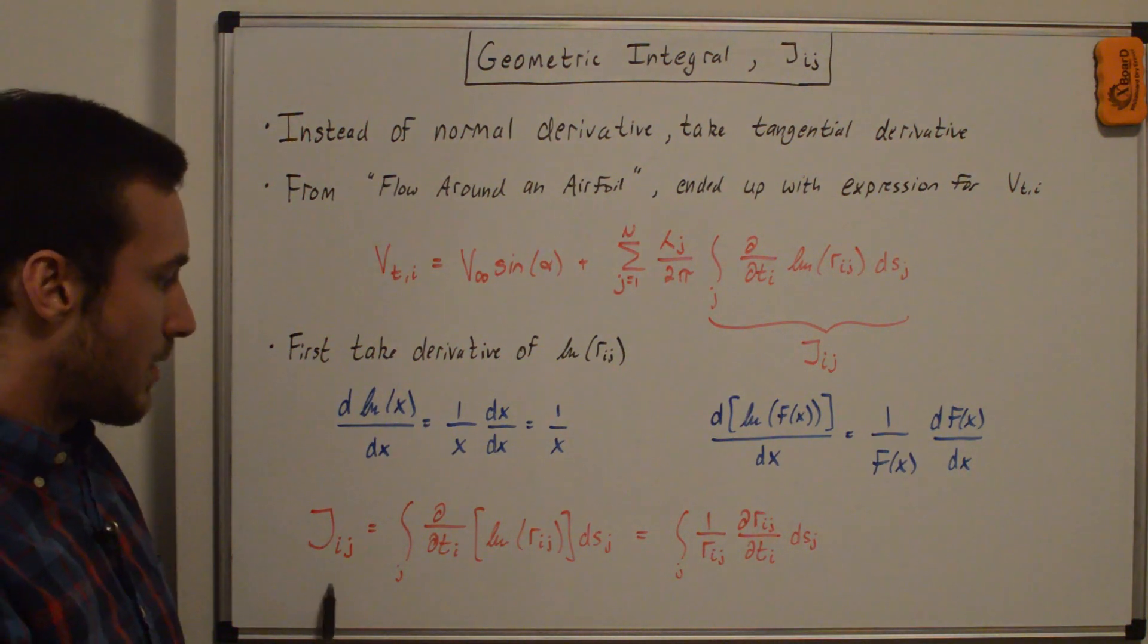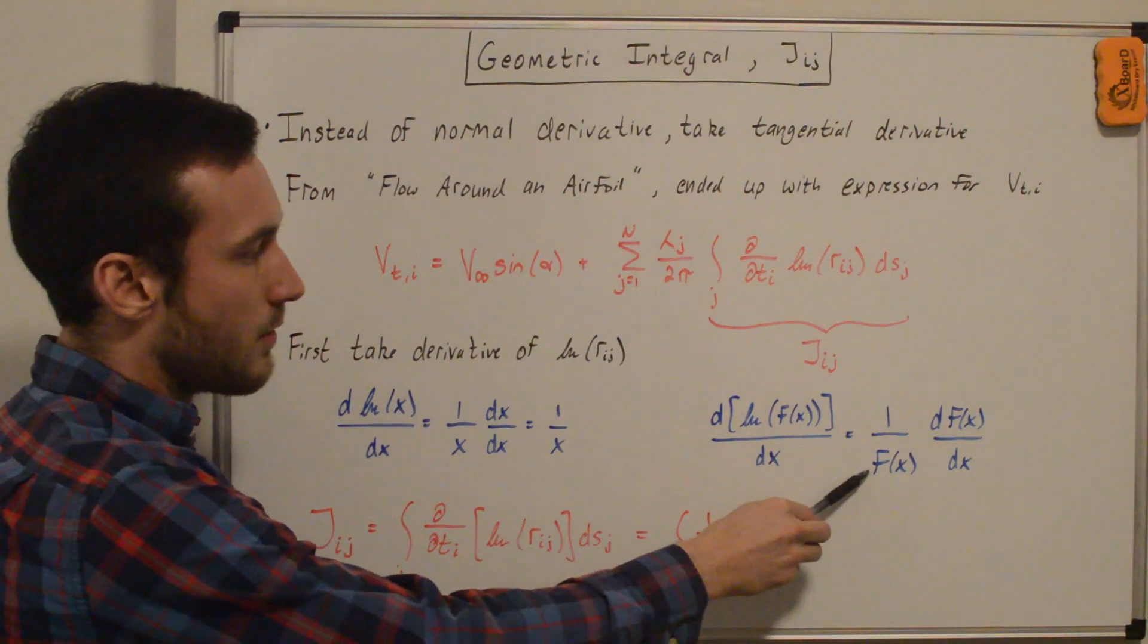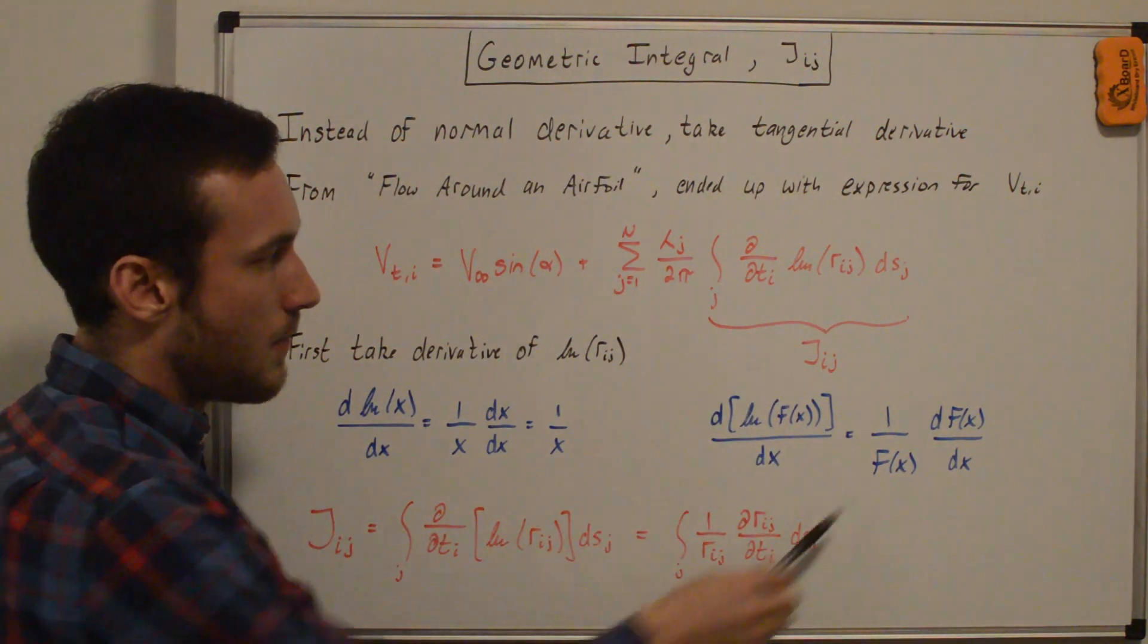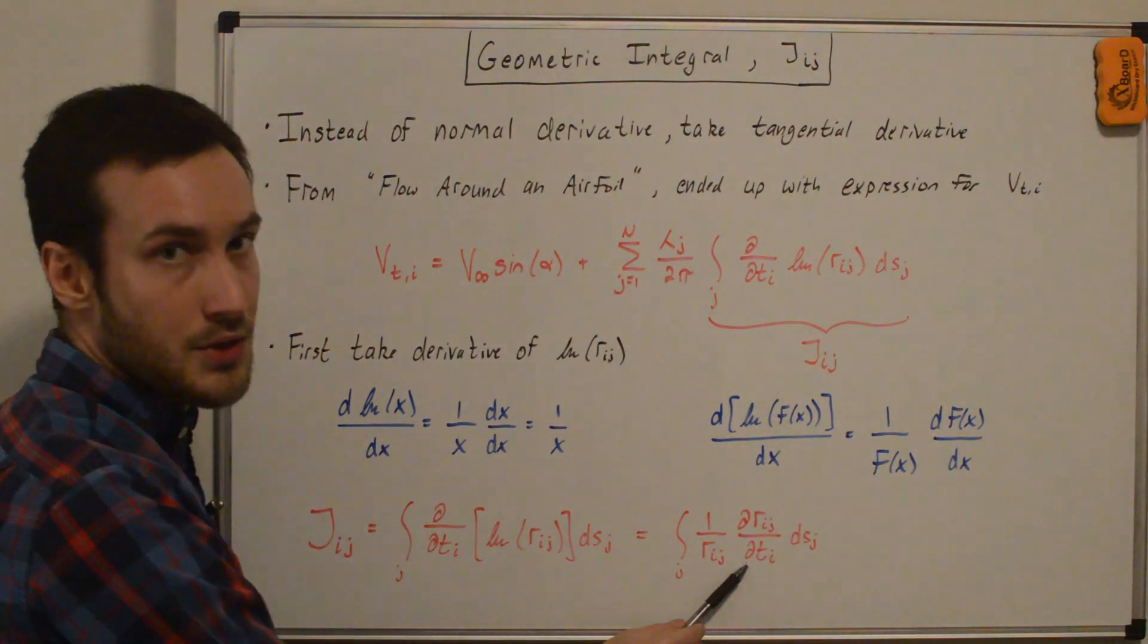And so if we do that down here, we have our jij is equal to that integral from above. And we get 1 over f(x), where f(x) is rij. So that's 1 over rij. And then df(x)/dx is drij/dti, now instead of dni.